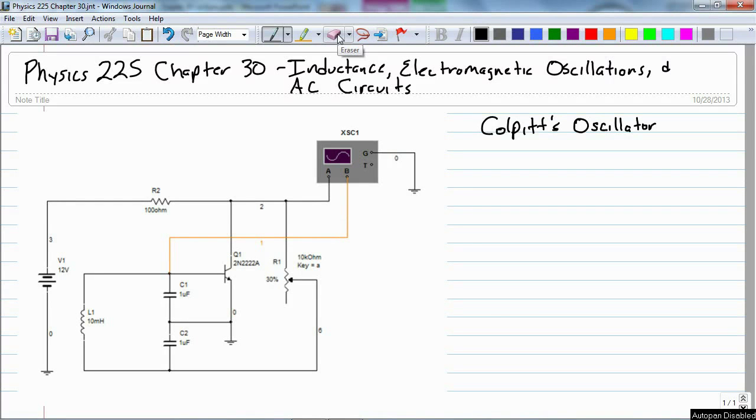Let's look at an example of an LCR circuit. This is called a Colpitt's oscillator, and for an oscillator, we really want to be able to overcome the resistance.